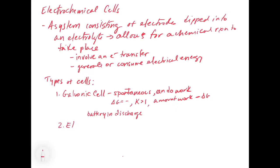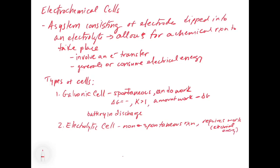An electrolytic cell is the opposite — it's a non-spontaneous reaction. This requires work, which comes in the form of electrical energy, meaning we have to put electrical energy in to make the cell work. Delta G in this case is going to be positive, and K is going to be less than 1. The amount of work that needs to be done on the cell is proportional to delta G — the bigger the positive delta G, the more electrical energy you have to put in. This would be your battery in charge mode.